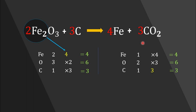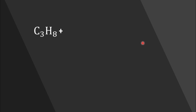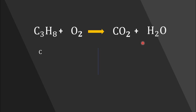Let's examine another equation: C₃H₈, a hydrocarbon called propane, reacts with oxygen to produce carbon dioxide and water. Just like before, count the number of atoms on each side of the reaction arrow. In the reactant side we have three carbon, eight hydrogen, and two oxygen atoms. In the product side we have one carbon, two hydrogen, and three oxygen atoms.